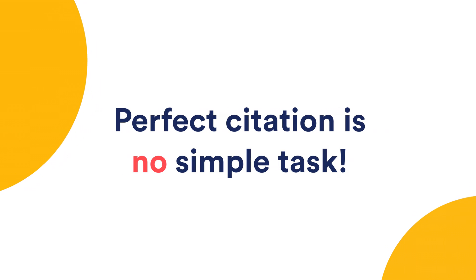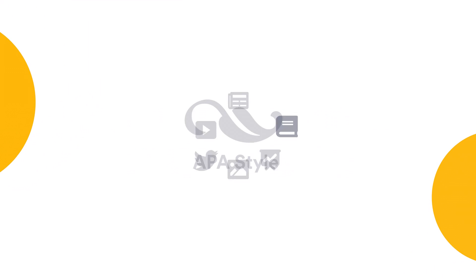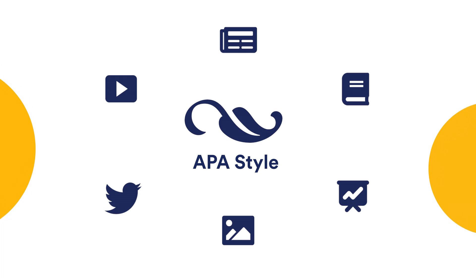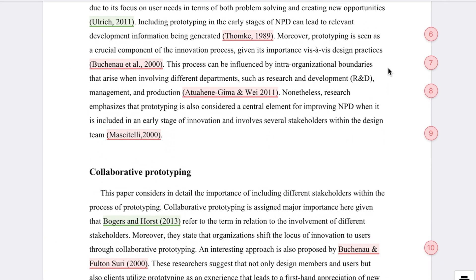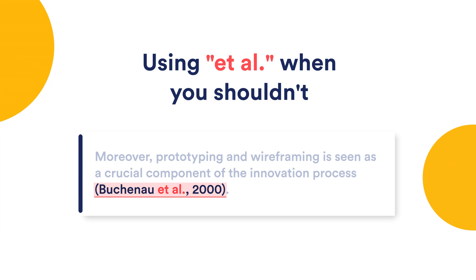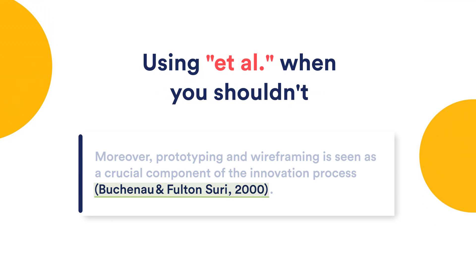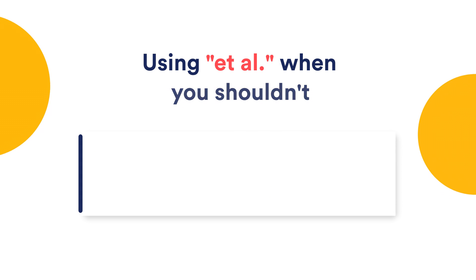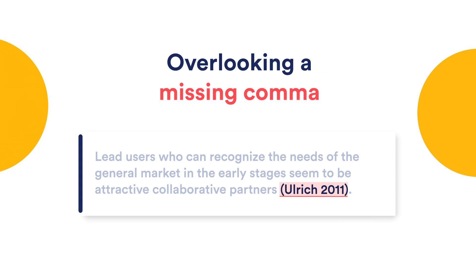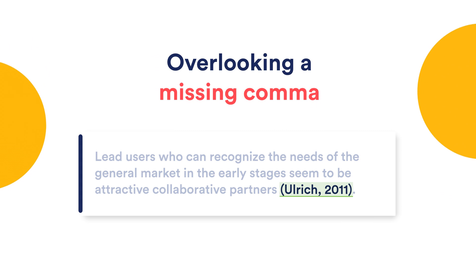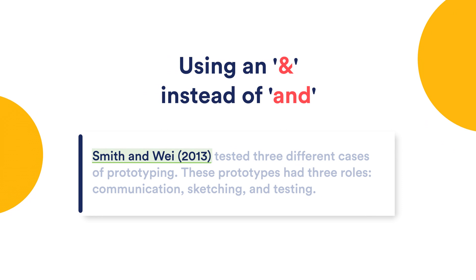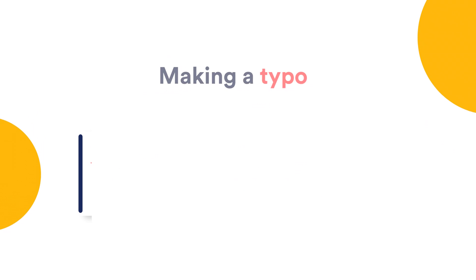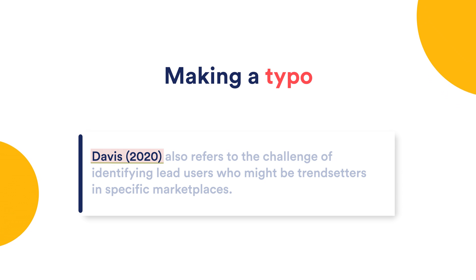Perfect citation is no simple task. Even if you know your way around APA style, it's easy to miss small mistakes — like using 'et al.' when you shouldn't, overlooking a missing comma, using an ampersand instead of 'and,' or making a typo. Right, it's Davis, not David.